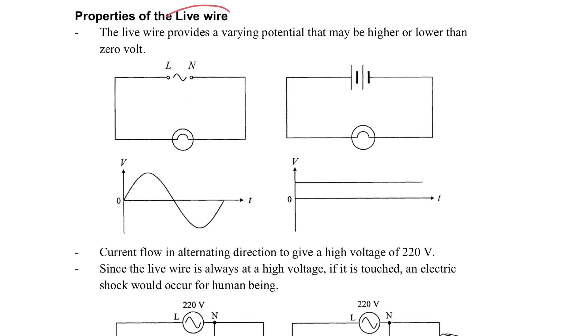Firstly, the live wire. The live wire is important because it provides a varying potential. It may be higher or lower than zero volt, which is the varying potential. On the left hand side you can see this is the AC circuit. The neutral side is always at zero volt, and the live side potential is changing.